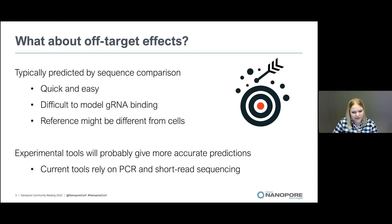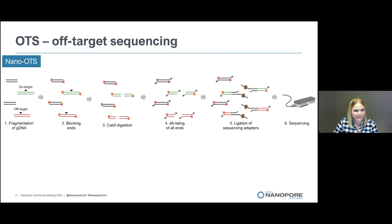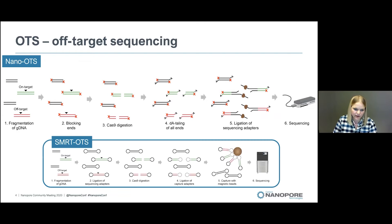There are also experimental tools for these predictions that will probably give a little more accuracy, though they rely on PCR and short-read sequencing. We wanted to utilize the strengths of long-read sequencing for Cas9 off-target detection, so we developed a method we call off-target sequencing, or OTS. Nano-OTS is the version using nanopore sequencing. The lab protocol is very similar to the Cas9 enrichment method, with a key difference: we only use one guide RNA in the Cas9 digestion. We also have a version using packed biosequencing, called Smart OTS.